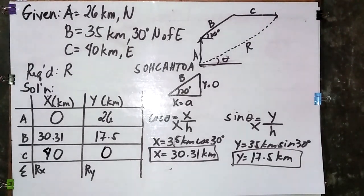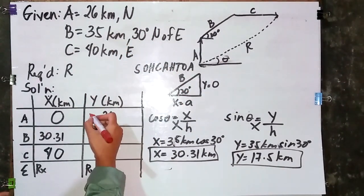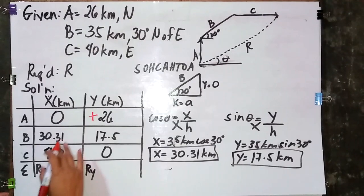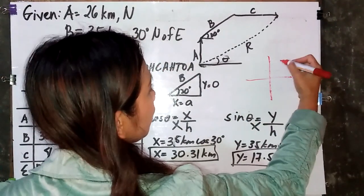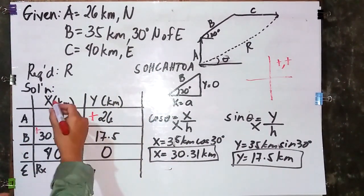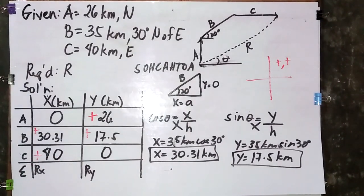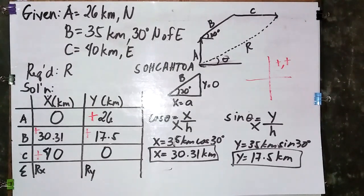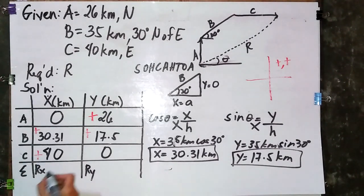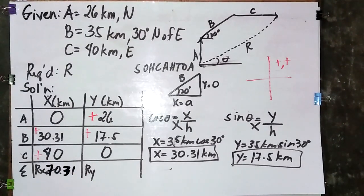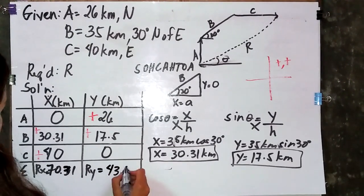Before we proceed, let's identify the signs of these vectors. Since Vector A is north, it lies on the positive y-axis, so it is positive. Vector B is north of east, which is in the first quadrant, so it has positive x and positive y. Vector C is east, so it lies on the positive x-axis. Now, let's get the summation of Rx: 30.31 plus 40 equals 70.31. And the summation of Ry: 26 plus 17.5 equals 43.5.